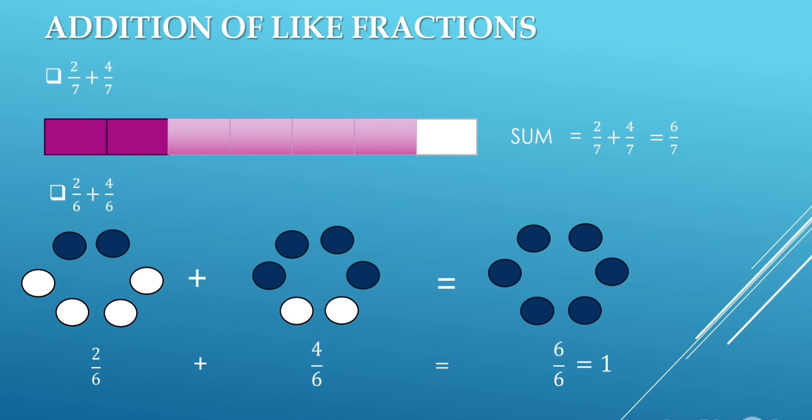Now let's move to the next question: 2 upon 6 plus 4 upon 6. Here, total number of circles are 6; out of these 6 circles, 2 are shaded. We will add 4 upon 6 to 2 upon 6, so we will shade 4 more circles. Now total shaded parts are 6, and the fraction will be 6 upon 6. It means out of the total number of parts, all parts are shaded, so it will become one whole unit.